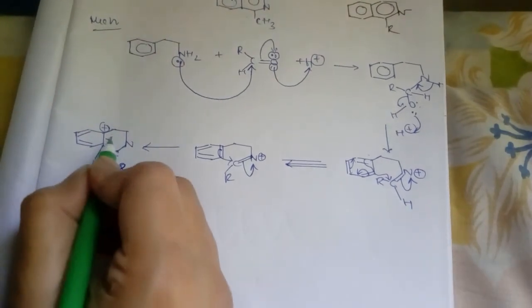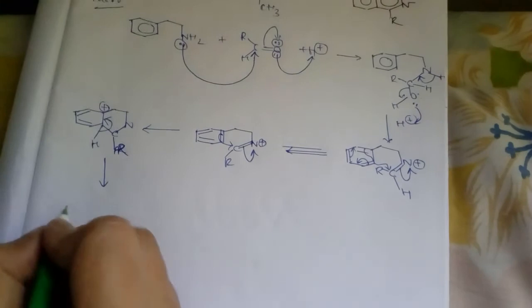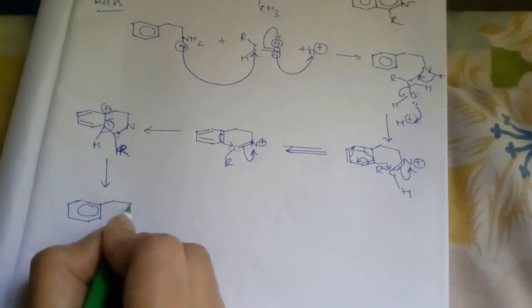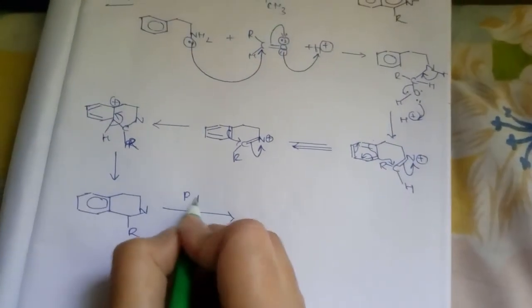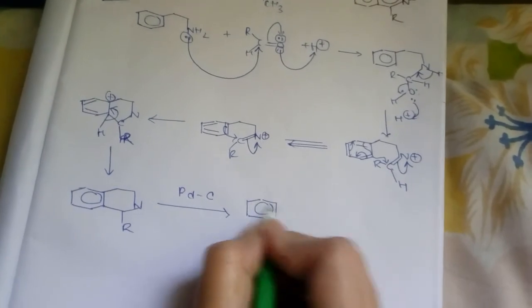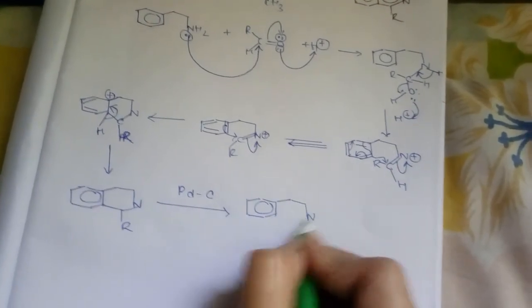Now this hydrogen bond will break to maintain aromaticity and this will form. Now by using palladium carbon or selenium or sulfur we will get the isoquinoline derivative.